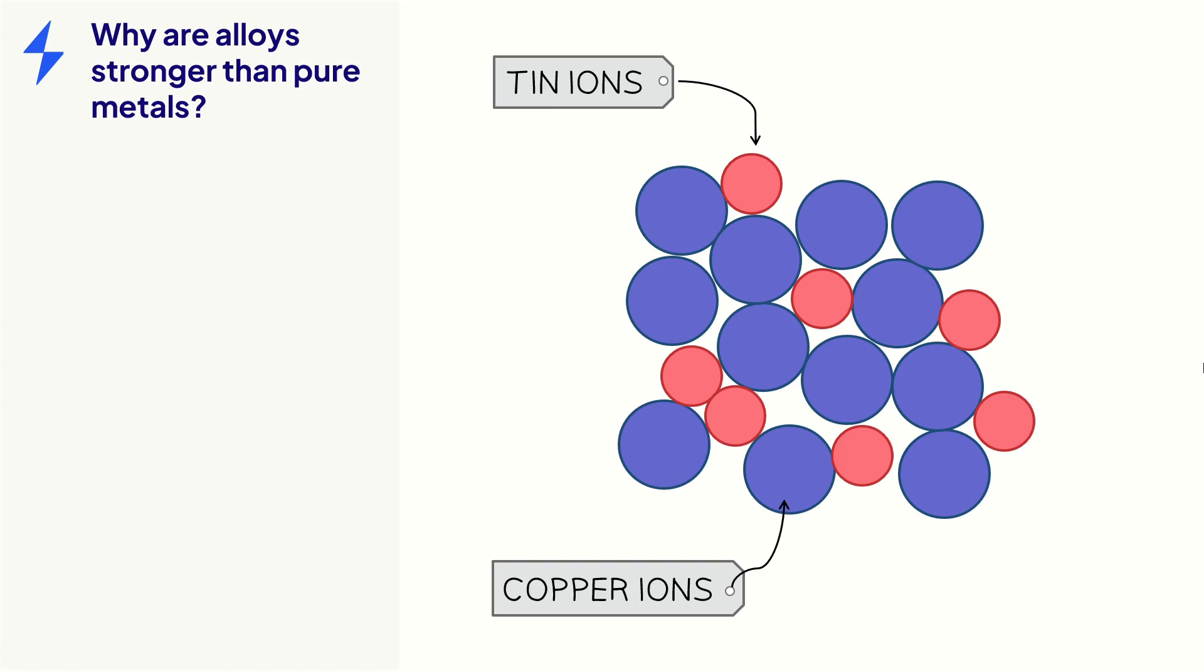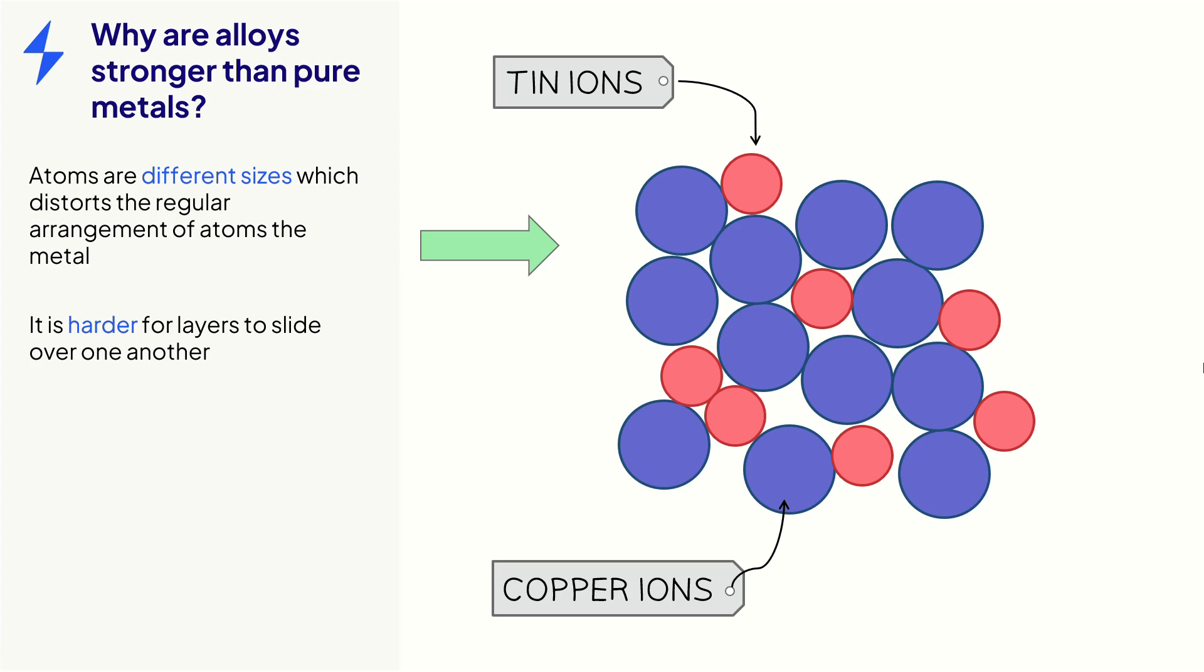However, if we look at an alloy such as bronze, we can see that the atoms are different sizes, and the regular arrangement of the pure metal has been distorted. This means it is much harder for the layers to slide over one another.